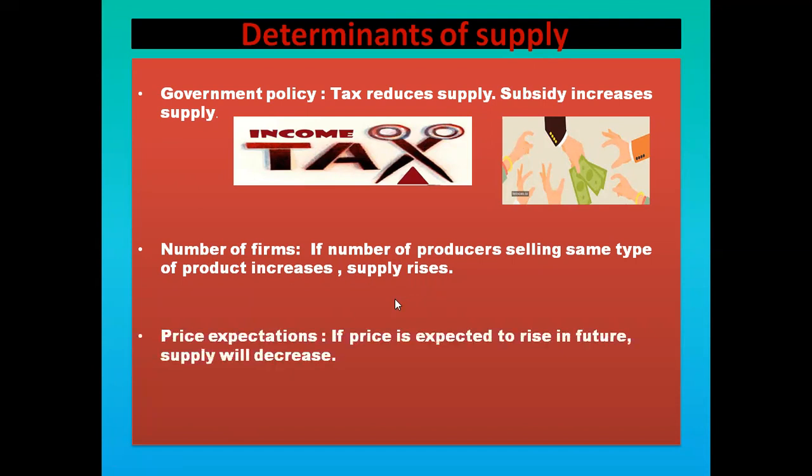Next is price expectation. If the price is expected to rise in future, the producer will hold or store the commodity so that when the price rises they will supply more. But at present the supply will decrease.